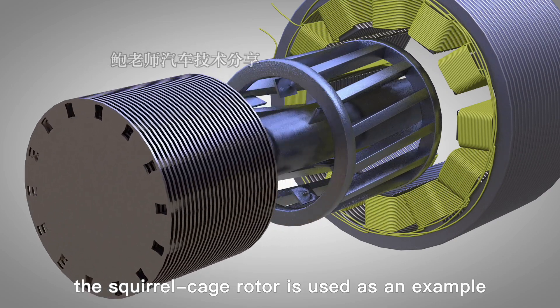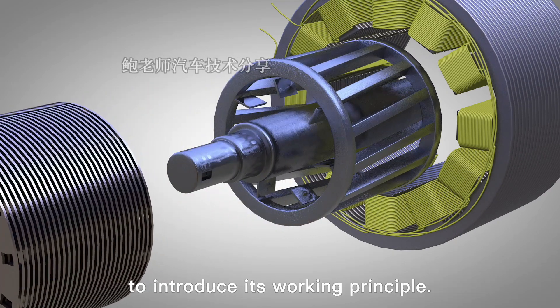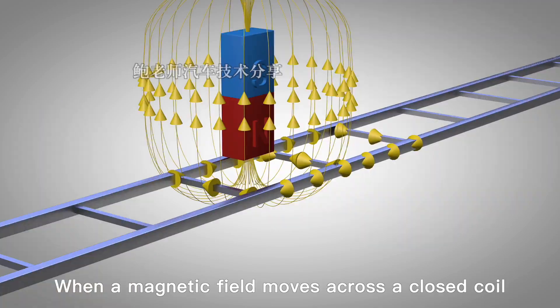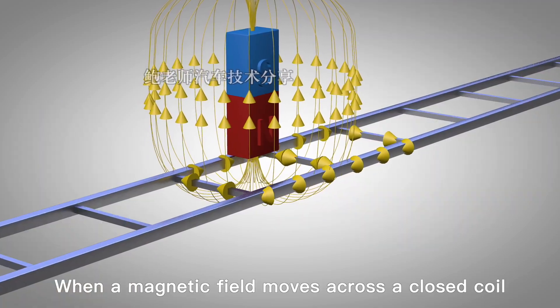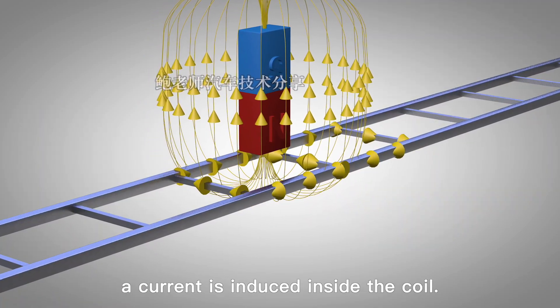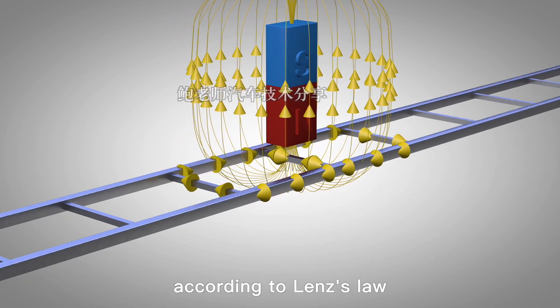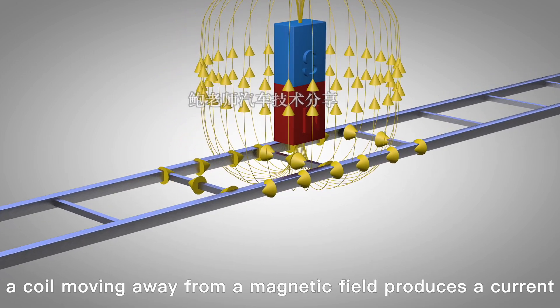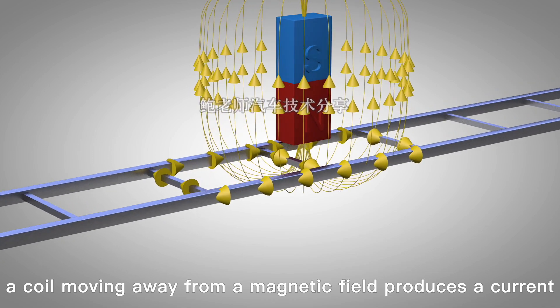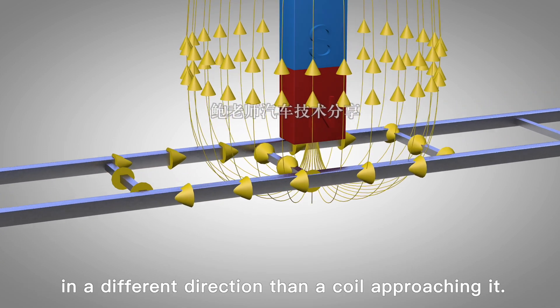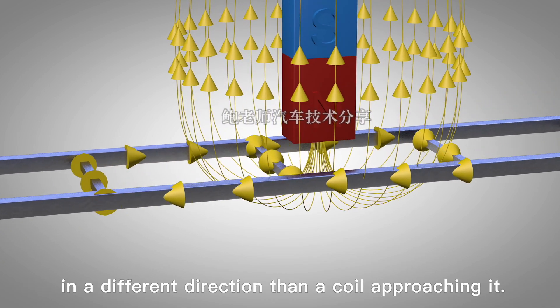The squirrel-cage rotor is used as an example to introduce its working principle. When a magnetic field moves across a closed coil, a current is induced inside the coil. As shown in the video, according to Lenz's law, a coil moving away from a magnetic field produces a current in a different direction than a coil approaching it.